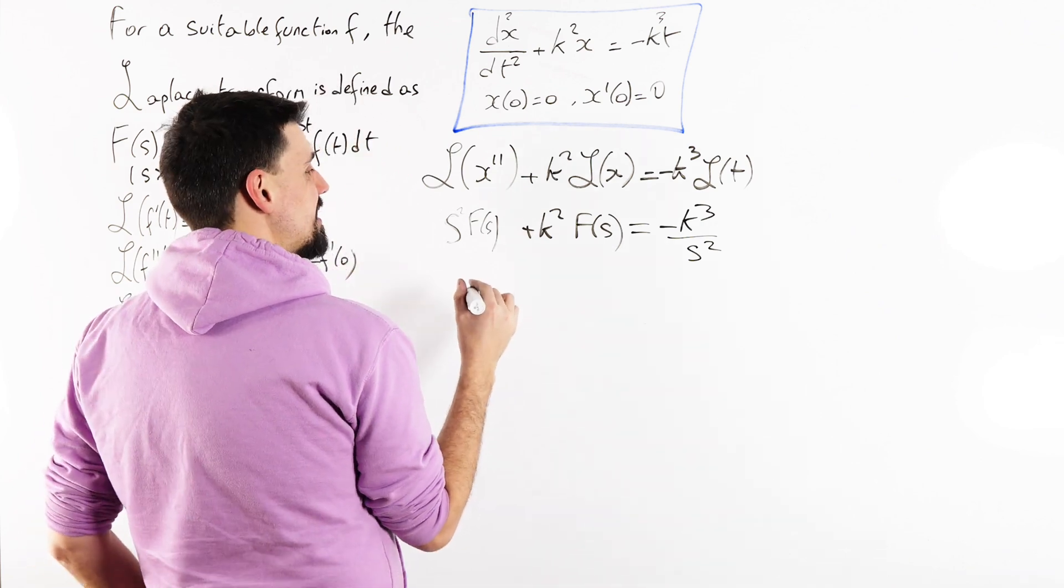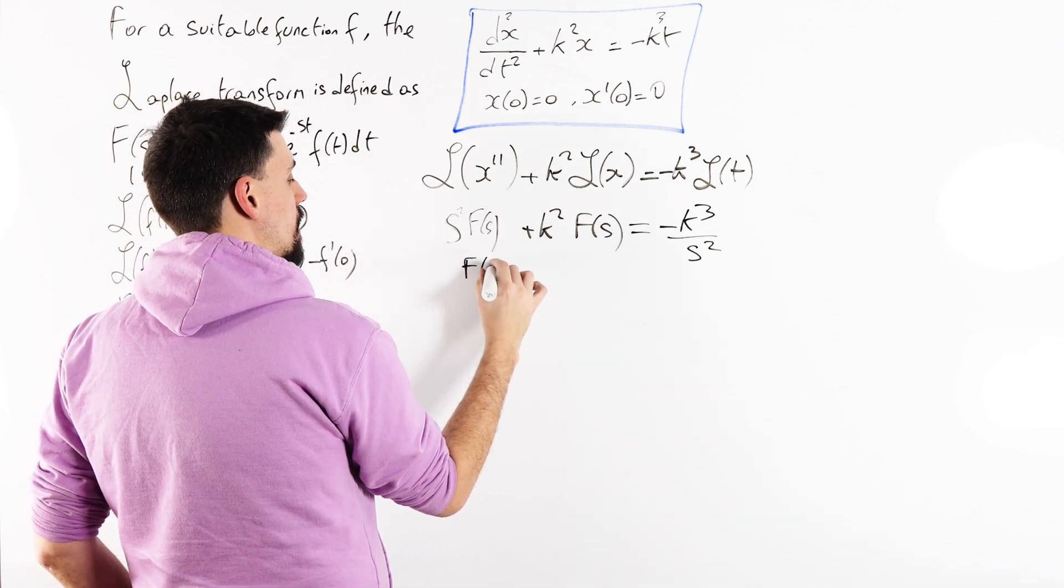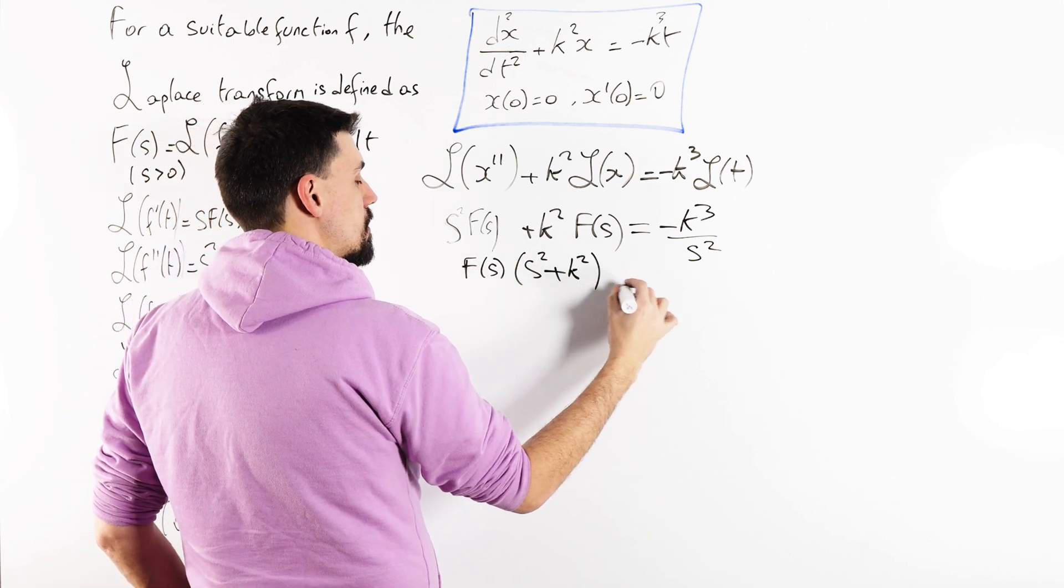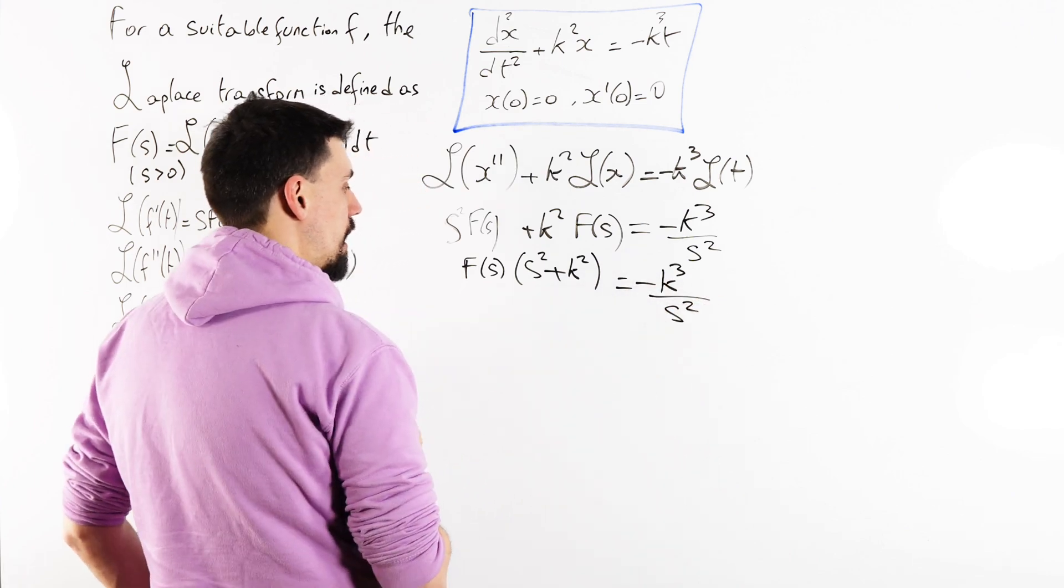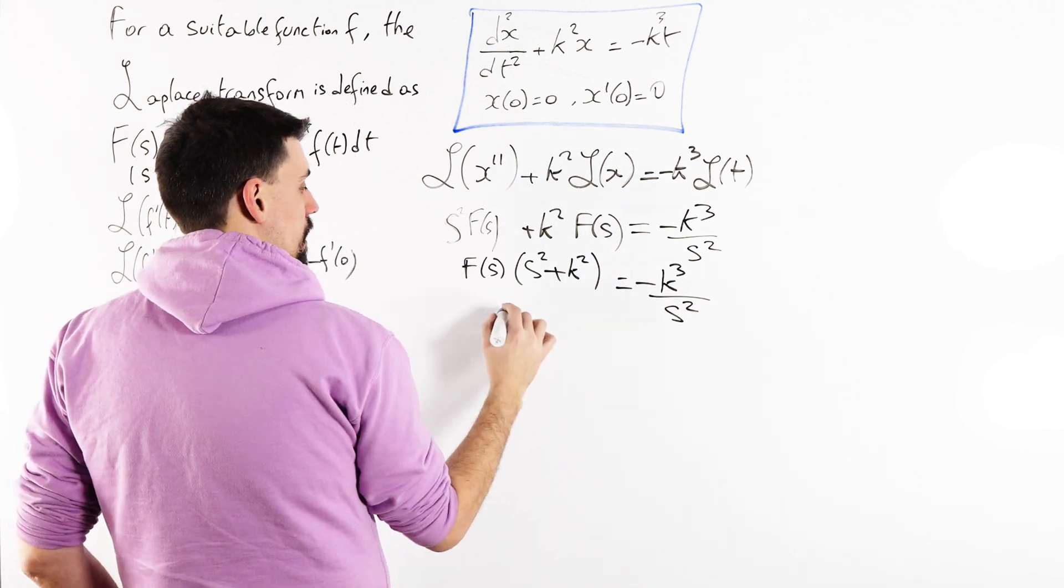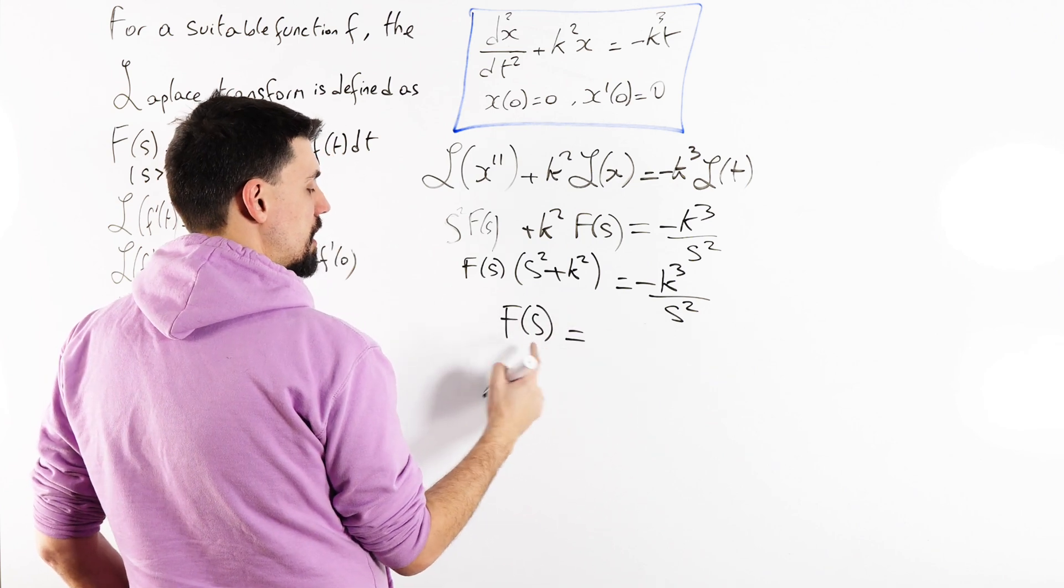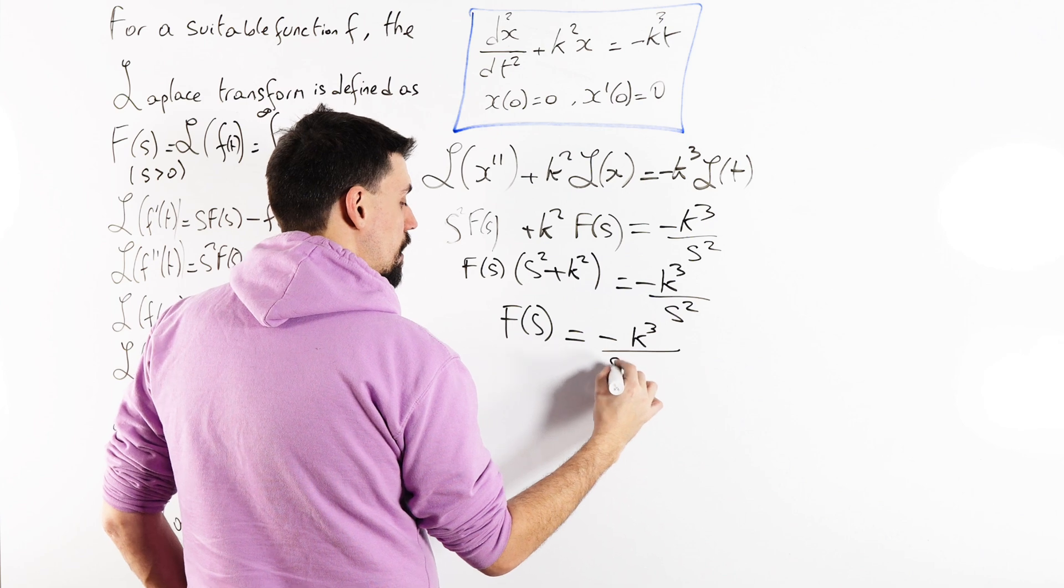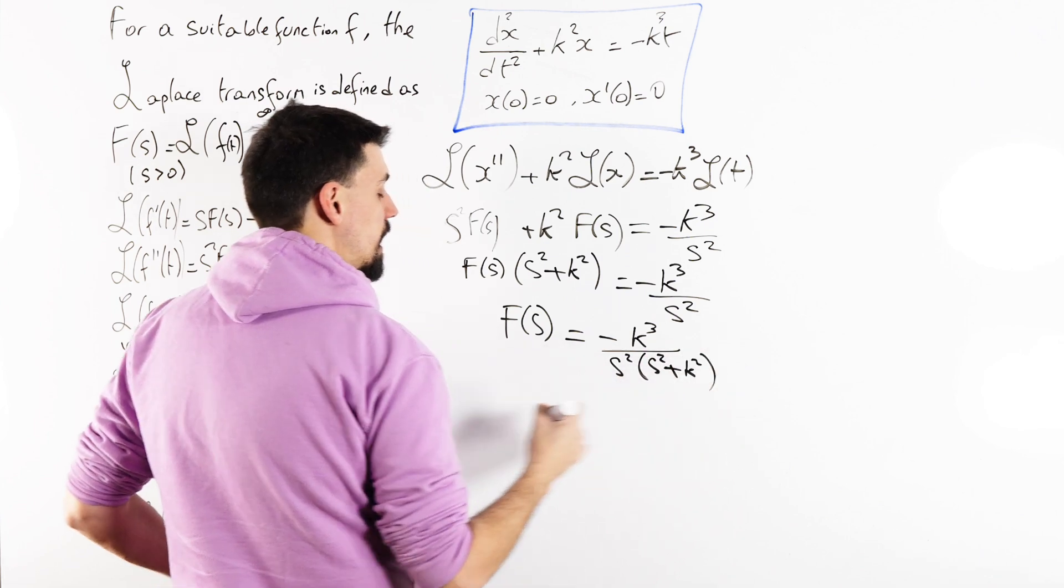So what's quite nice here is that we get f of s times s squared plus k squared is minus k cubed over s squared. So, my Laplace transformation, so remember this is Laplace transformation of x, is minus k cubed over s squared times s squared plus k squared.